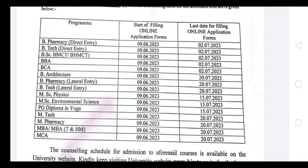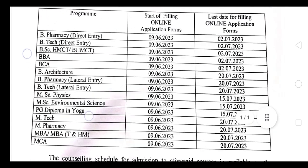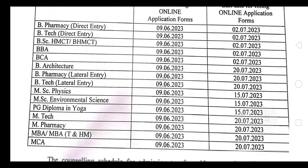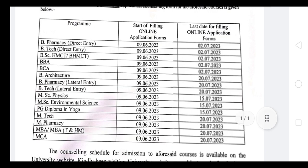जैसे कि यहाँ पर B.Pharmacy direct entry वालों की last date 2 July 2023 है। और जो B.Tech direct entry इनकी भी 2 July 2023 है। वैसे ही BSC की भी, BBA, BCA — यहाँ पर देखो। अब यह जो नीचे line आई है — B.Architecture इनकी अलग है, B.Architecture वालों की 20 July 2023 है।